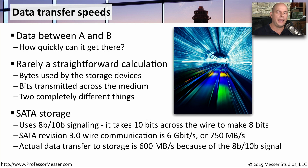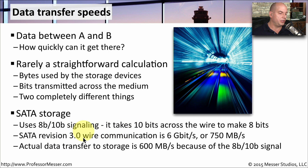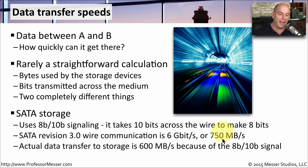We also have the challenge of looking at the total amount of throughput over a connection and evaluating that versus how much real data is getting through. If we look at SATA connectivity — our hard drives, SSD connections, and other storage devices plugged in inside our computer — these use a very specific signaling type called 8B10B. That means to send eight bits across that SATA connection, it really has to send 10 bits of actual information. Our SATA version 3 can communicate at six gigabits per second, so it can effectively send 750 megabytes of information over that period — we've taken six gigabits and divided it by eight to give us that number.